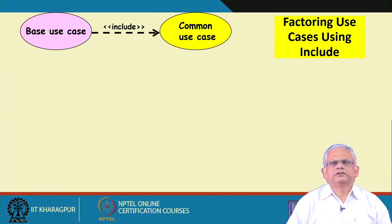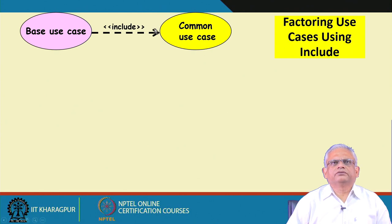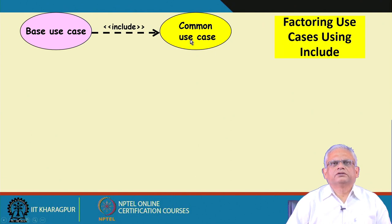Now let us look at the include technique for factoring use cases. Here we use a dotted arrow with an open arrowhead — the notation is important because these are standard notations. Compare this to generalization, which uses a solid arrow with a closed arrowhead. On the dotted arrow we stereotype it with 'include.'